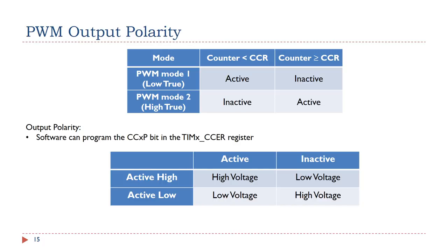Software can program the polarity of PWM signals. Each timer has two PWM modes — mode 1 and mode 2 — which are complementary to each other. Software can select the output polarity by writing the CCXP bit in the CCER register. Software can select either active high or active low. If active high, the output is high voltage for the active state and low voltage for the inactive state. If active low, the output is low voltage for the active state and high voltage for the inactive state.